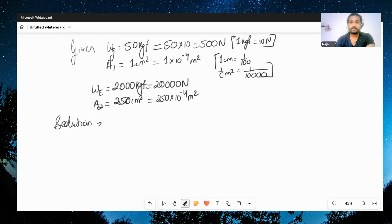Let's find out the answer. Solution is, we have pressure for the girl, we have force upon area, so we have F1 by A1. So we have 500 upon 1 times 10 raised to minus 4 meter square, so that would be 500 times 10 raised to 4.